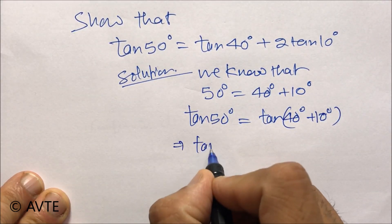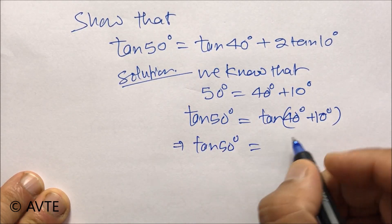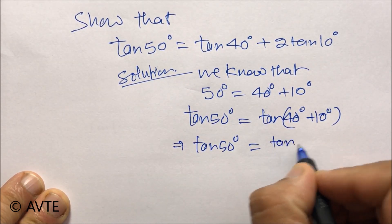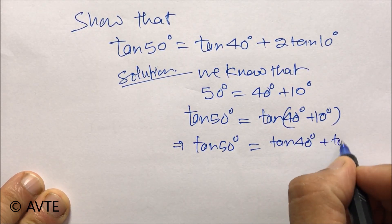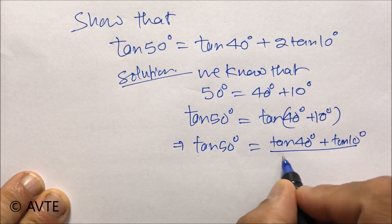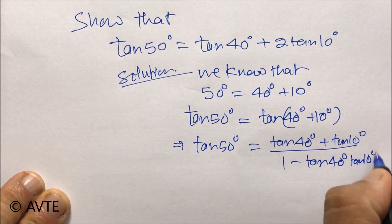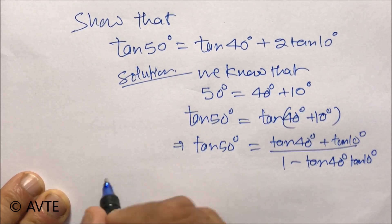And then we open tan of 40 plus 10 degrees, that is tan(a plus b) as tan 40 plus tan 10 degrees upon 1 minus tan 40 degrees into tan 10 degrees, and we cross multiply that.